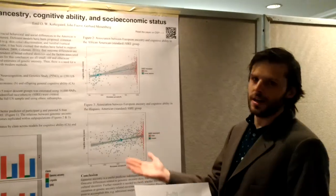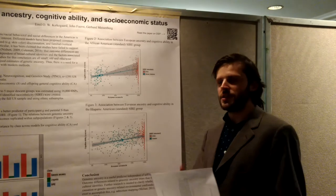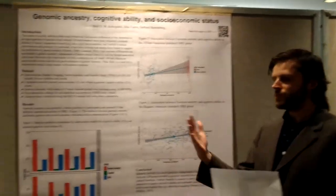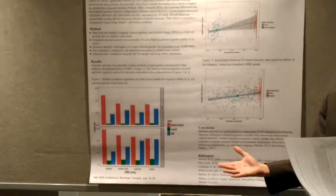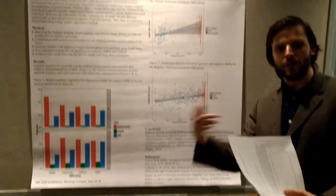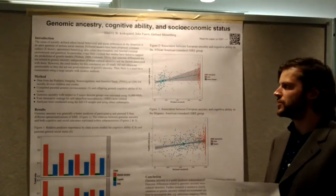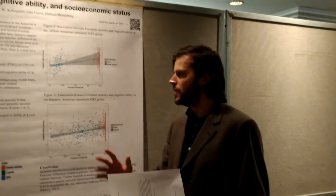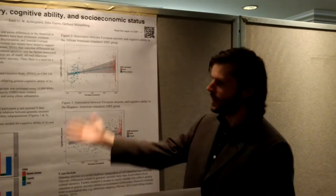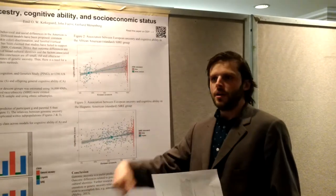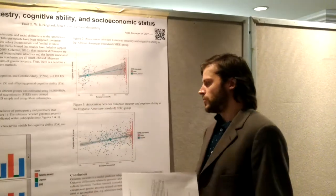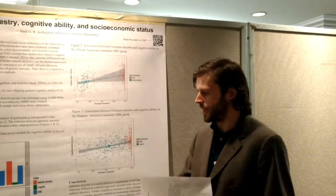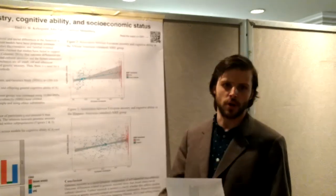What you really want is a large, racially diverse, modern dataset. You want to genotype everyone with something like a 23andMe chip, estimate the ancestry of each individual, and plug it into a regression model to see whether ancestry predicts IQ and social status, as genetic models would suggest.